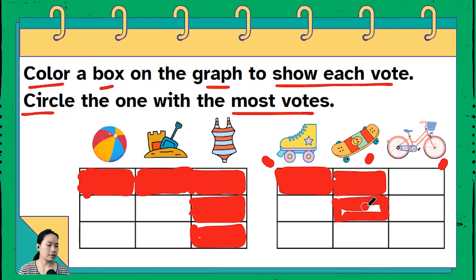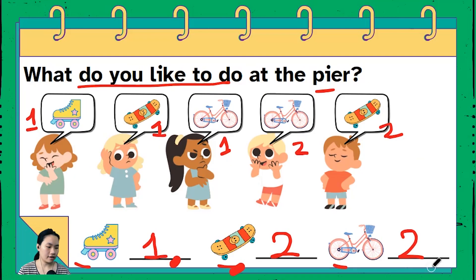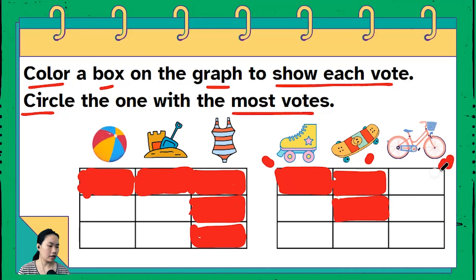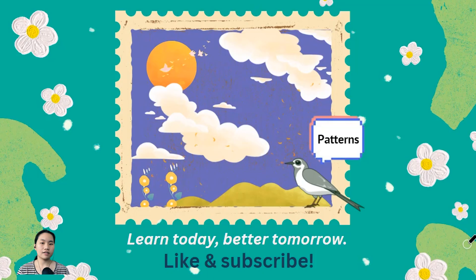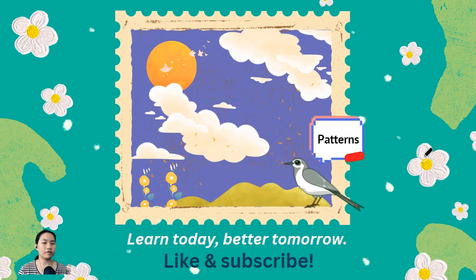Last but not least, the bike — how many kids would love to have the bike at the pier? There are two kids who would love to bike. So once again, one rectangle and two rectangles. That's it for statistics! Our next topic will be all about patterns, and we'll be making a return with number sense.